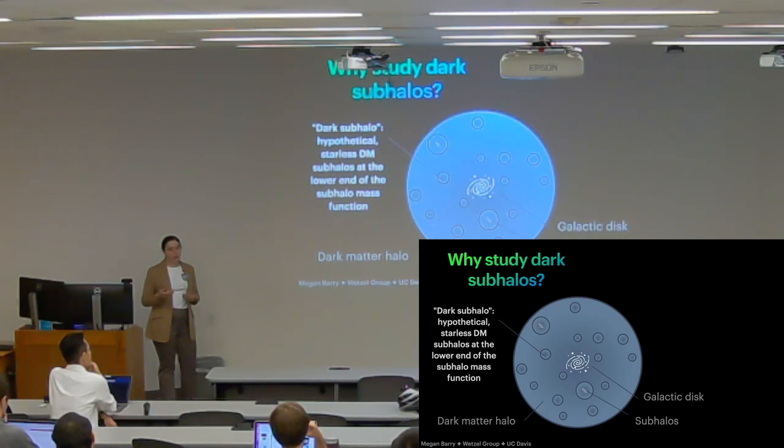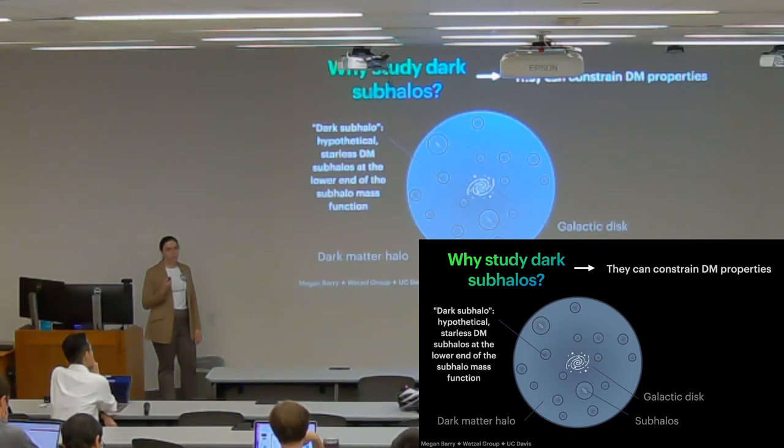And as I alluded to before, several dark matter models predict the existence of these objects, but not all of them. So if we were able to detect these objects, it would provide constraints on our models of dark matter, or as proponents of CDM might say, supporting evidence for CDM.